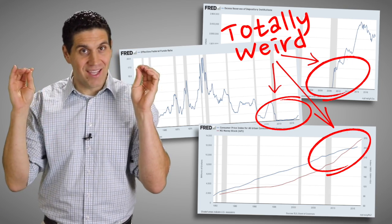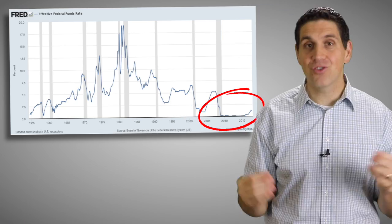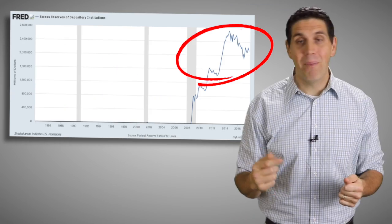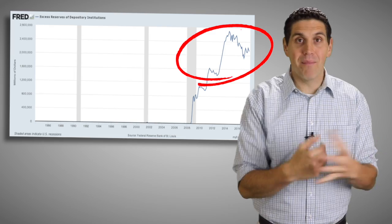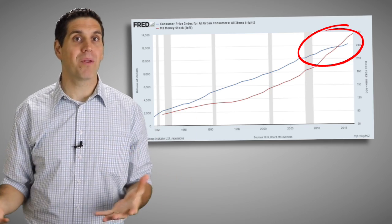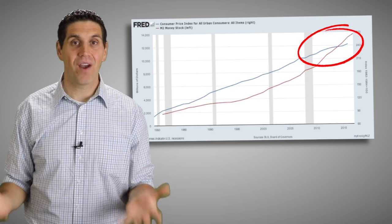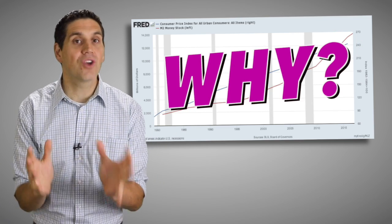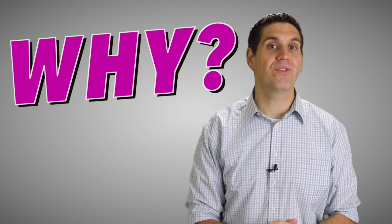Right now we're living in unique and unpredictable times. Interest rates have been extremely low. Banks aren't lending out very much money. They are holding a lot of money in reserves and there's this massive increase in the money supply, but we haven't seen very much inflation. So why? What is going on? Stick around to find out.